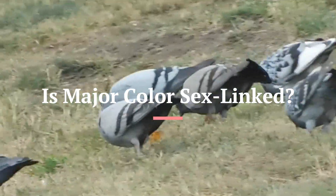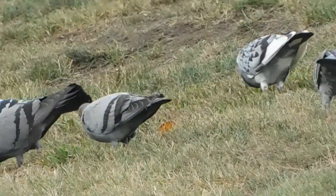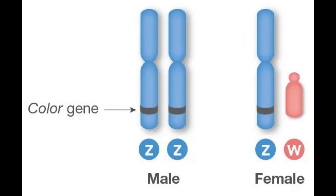Is major color sex linked? The major color locus is a single gene, which we'll call the color gene. It is located on the Z chromosome, which is one of the two sex chromosomes in birds. The other sex chromosome, called W, does not have a copy of the color gene. Sex chromosomes specify whether a bird is male or female.